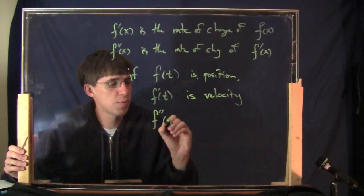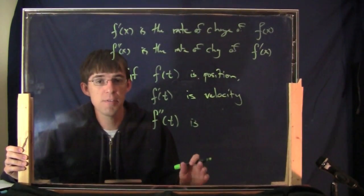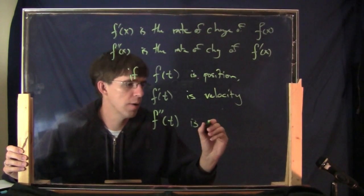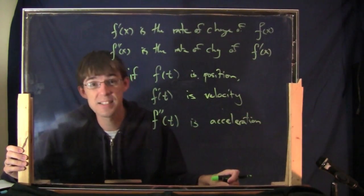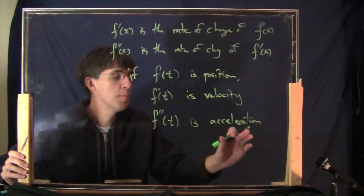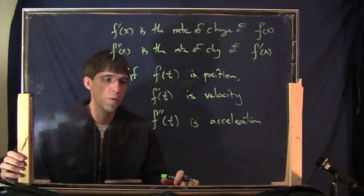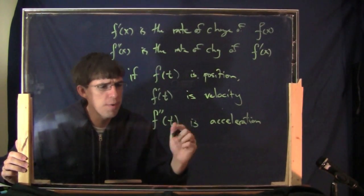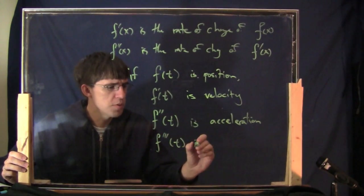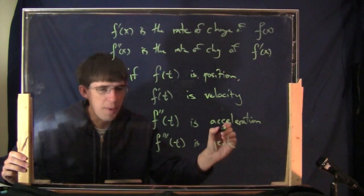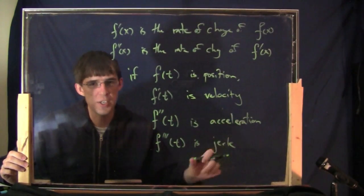What would the second derivative be then? This is how fast is the velocity changing. We also have a word for that in physics and in ordinary life — this is called the acceleration. How fast is the velocity changing? Everybody's familiar with acceleration. This is something that comes up a lot in the real world. In physics, actually, the third derivative also has a meaning. It's a little bit more obscure. There's a name for this — this is called the jerk. I'm not making this up. It's how fast the acceleration is changing.